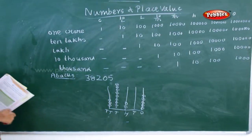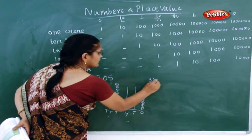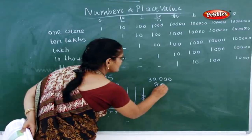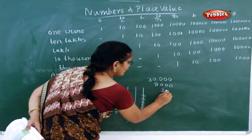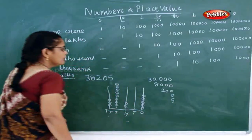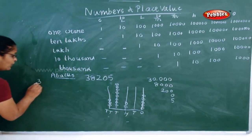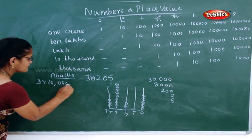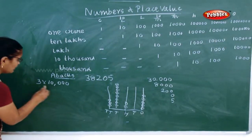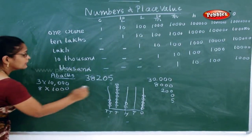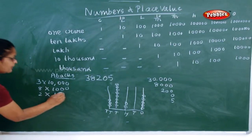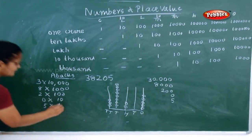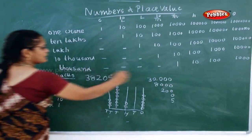Now how will you write? You will write 30,000. Then that is three into ten thousand. Then 8,000 — you are expanding it. 8,000, two hundred, zero and five. Now this is one way. Then another way — how will you do it? Still more expanded: three into ten thousand, eight into thousands, two into one hundred, zero into ten, five into ones. So this is what you call it as abacus form. This is how you have to do your abacus form.